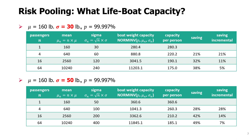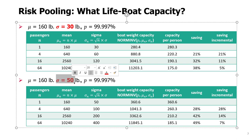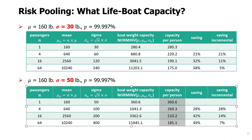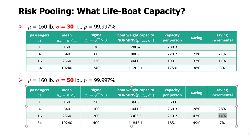If we try sigma equals 50 pounds instead of 30, this is the difference shown in the second table — those decreases will be even more pronounced. There will be 28% saving and then an additional 14%, so actually bigger decreases than in the first case.